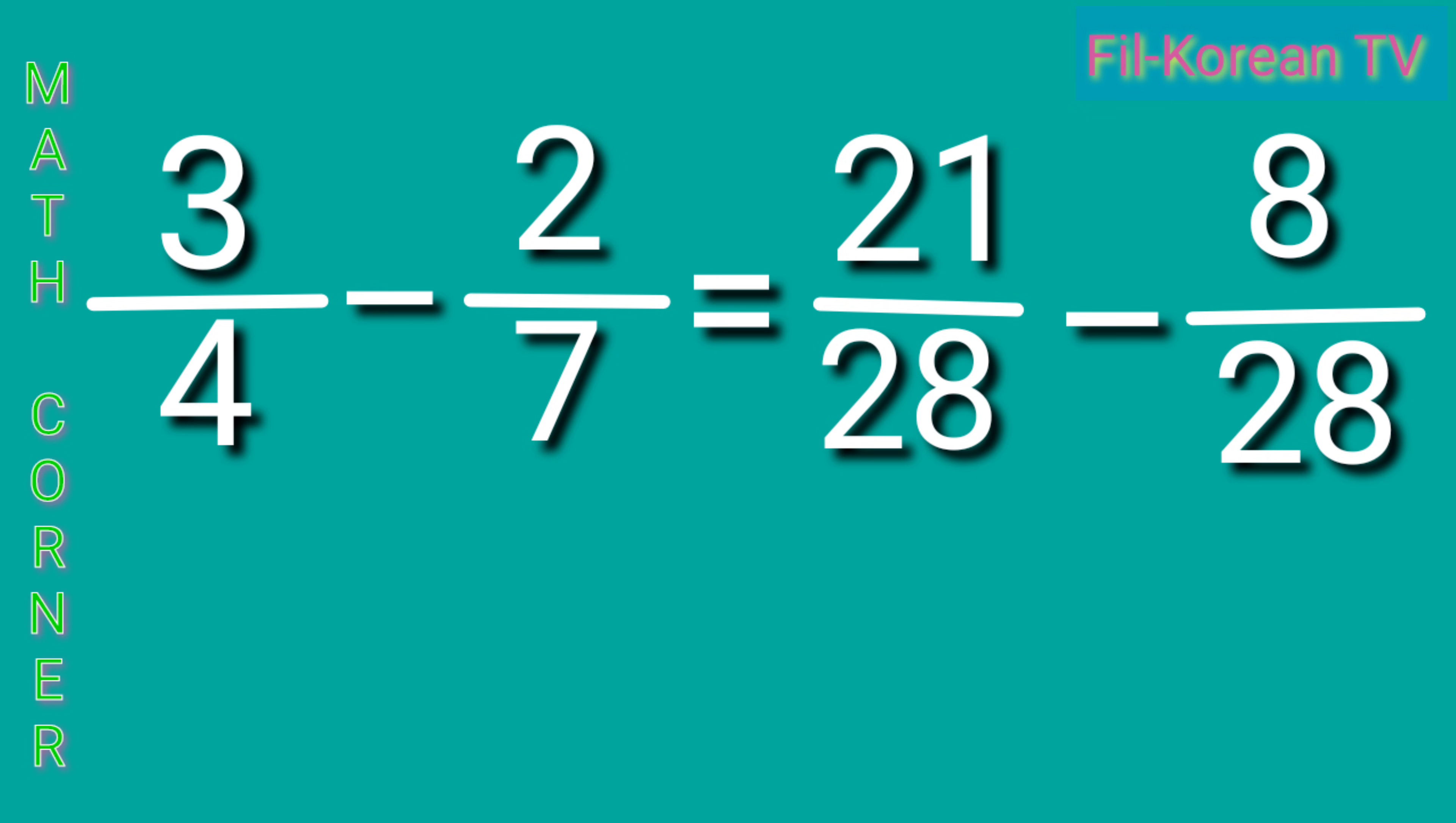Next step, subtract the numerators and copy the LCD. 21 minus 8 equals 13. Copy the LCD, 28. This is now the final answer.